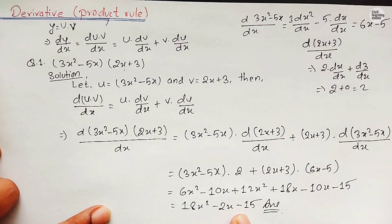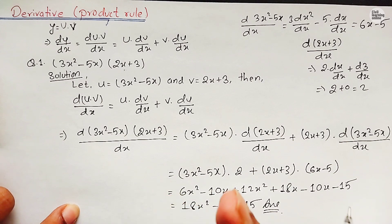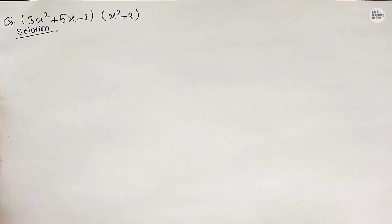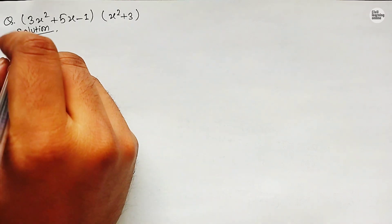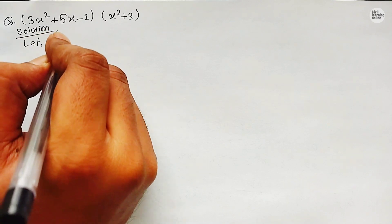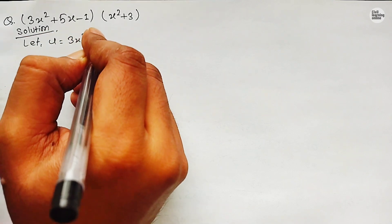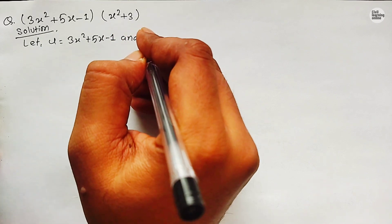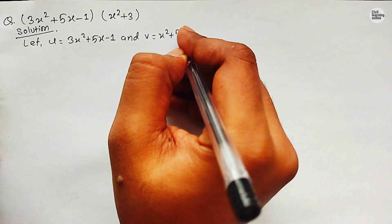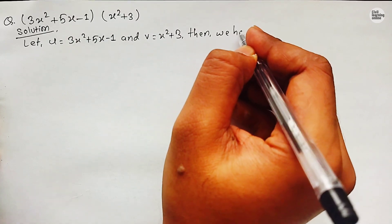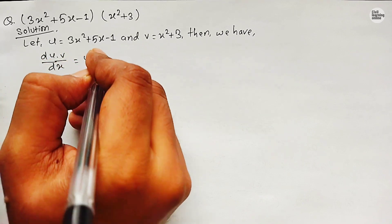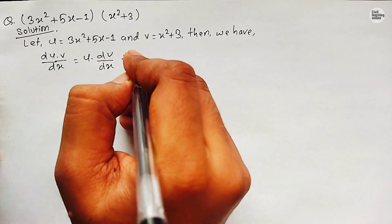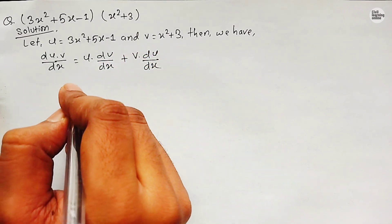Now let's look at a second numerical problem: (3x² + 5x - 1)(x² + 3). We let u equals 3x² + 5x - 1 and v equals x² + 3. Then d(uv)/dx equals u times dv/dx plus v times du/dx.